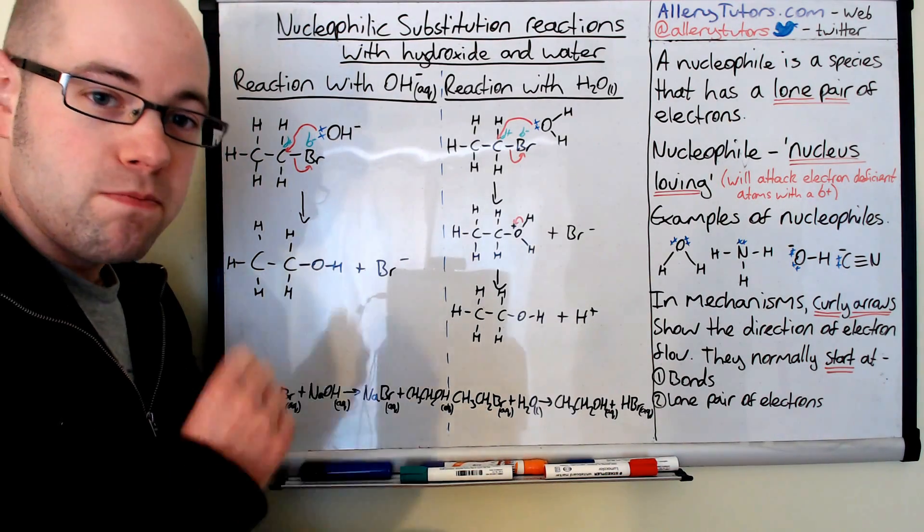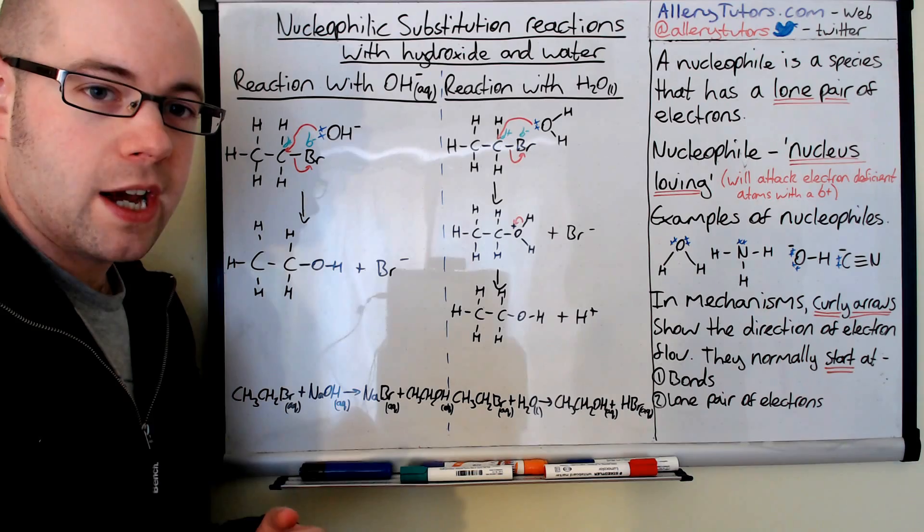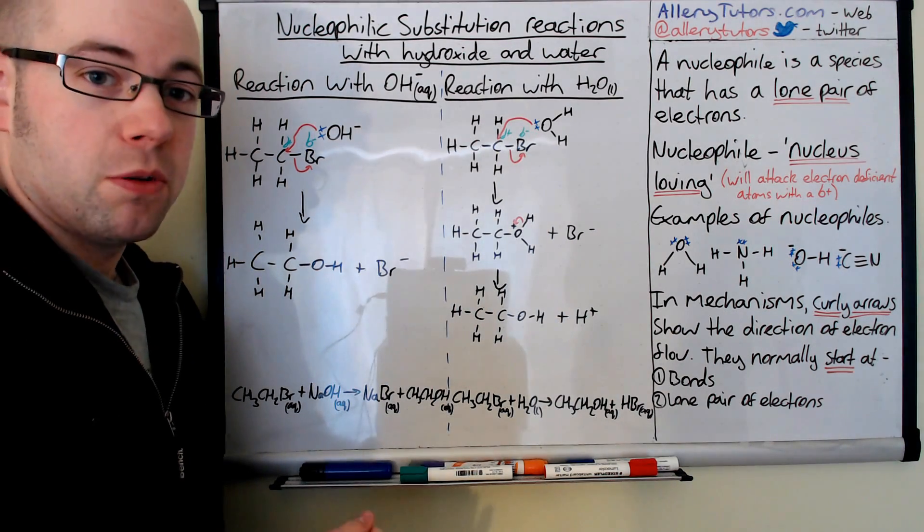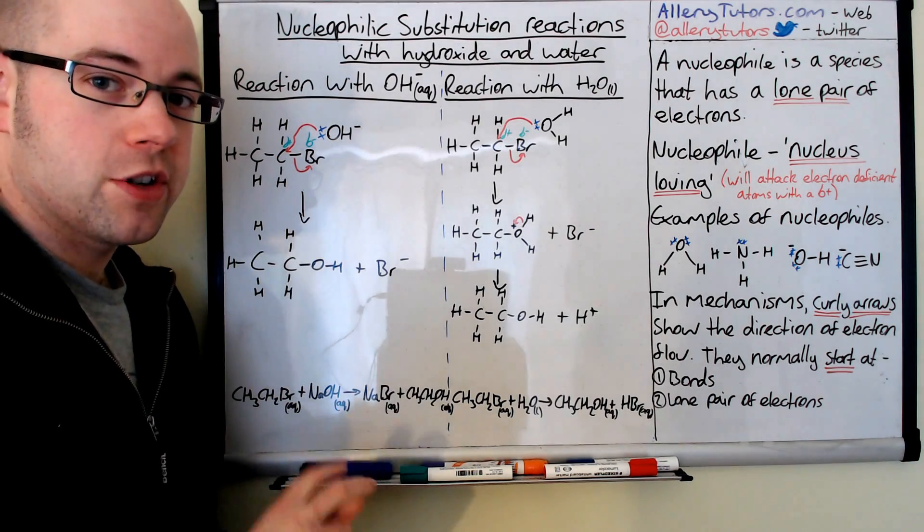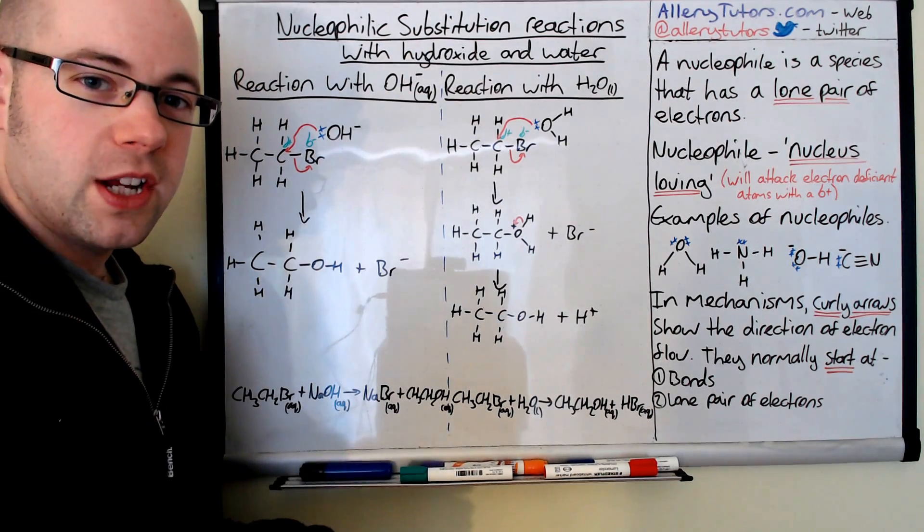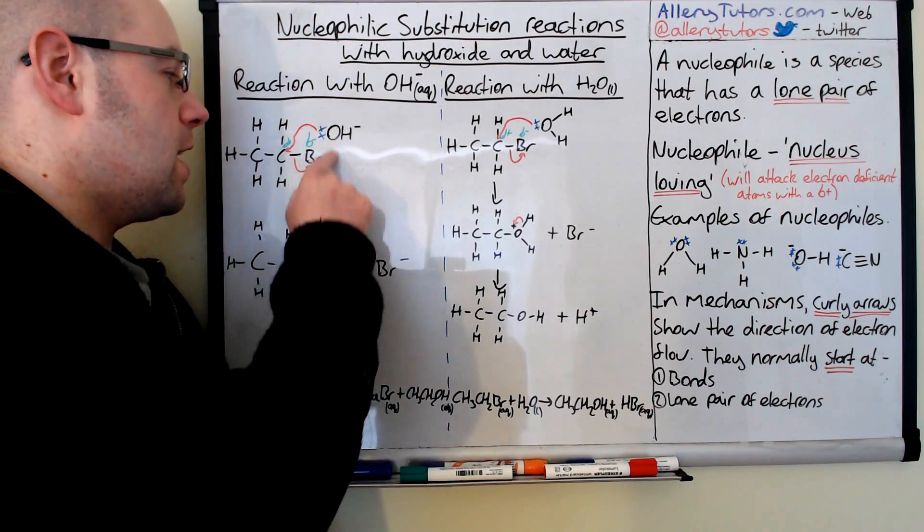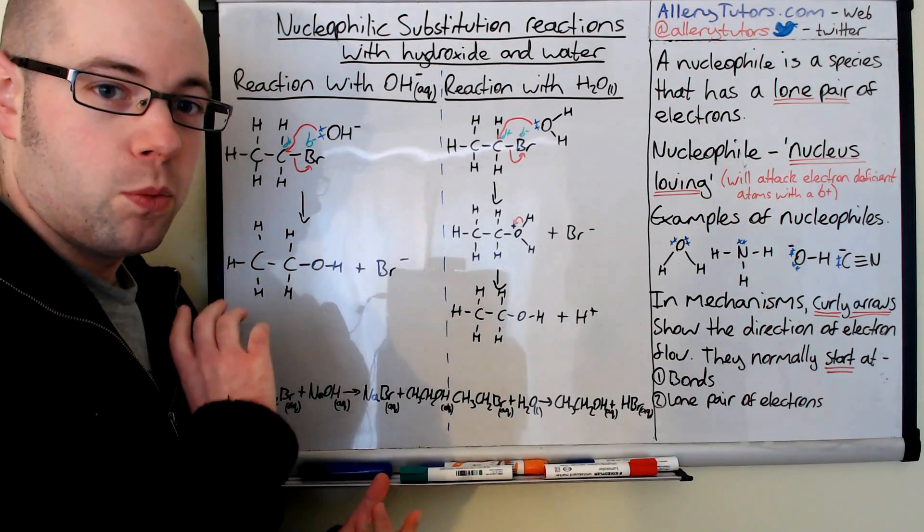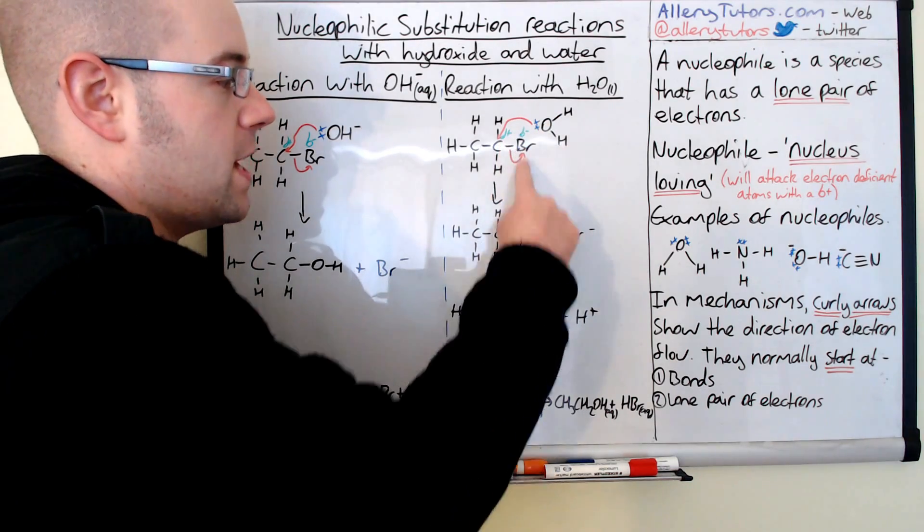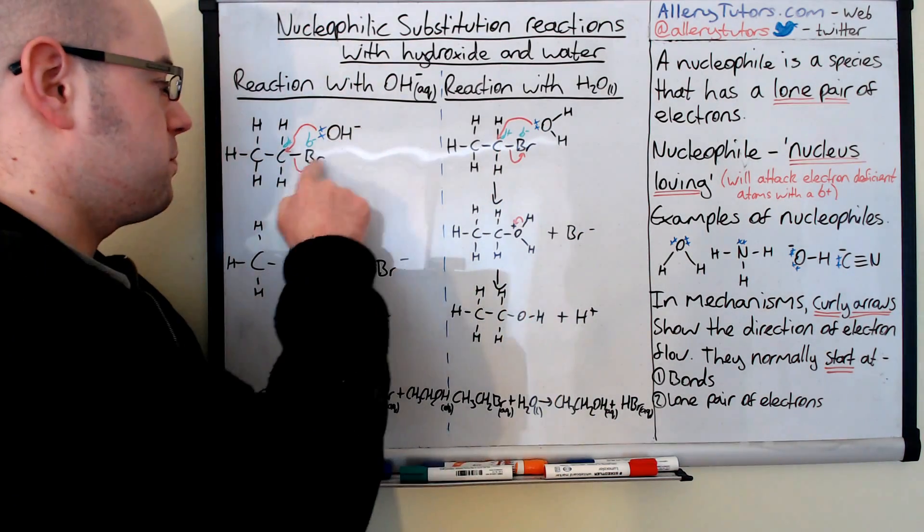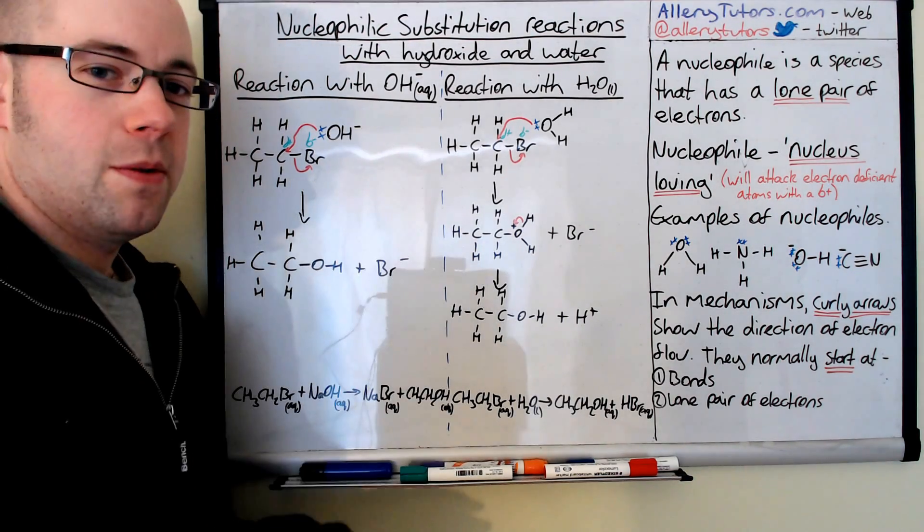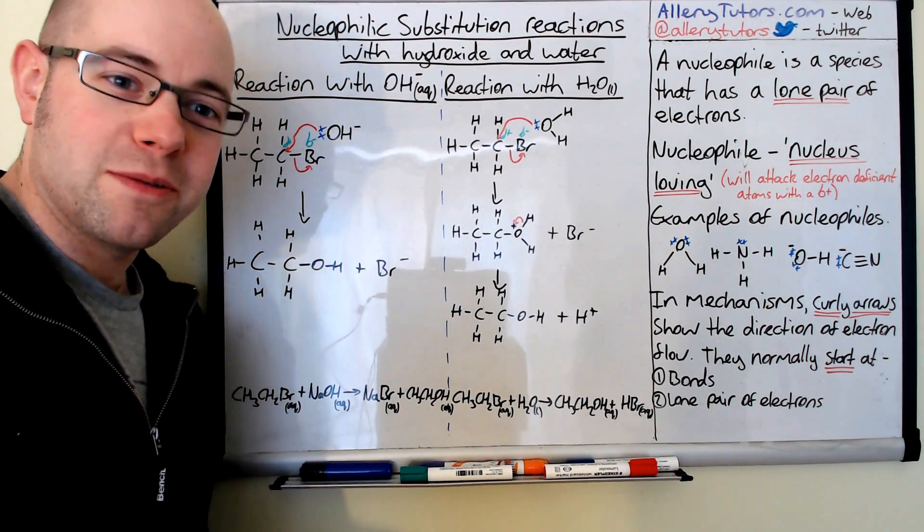But that's it. You must make sure your curly arrows are going the right way and you must make sure that the lone pairs are on your molecules as well, as well as your charge. Just one final thing actually. The reason why it's called substitution is because we're substituting a halogen for an OH. So we're swapping it for one molecule with another. You can see here that we did have bromine there, now it's an OH. We did have bromine here, now it's an OH. So that's why we call it a substitution reaction and we're doing it with a nucleophile. And that's it. Hope that helps. Bye.